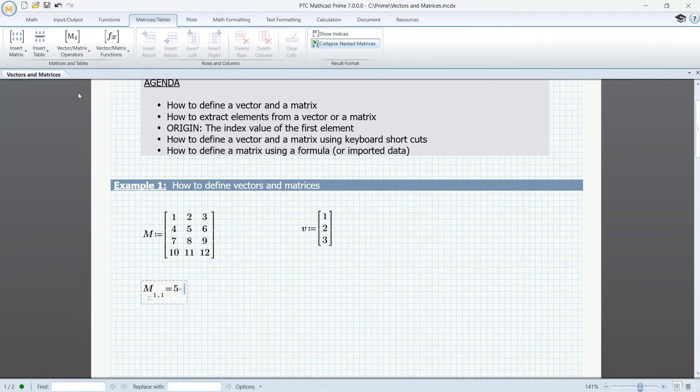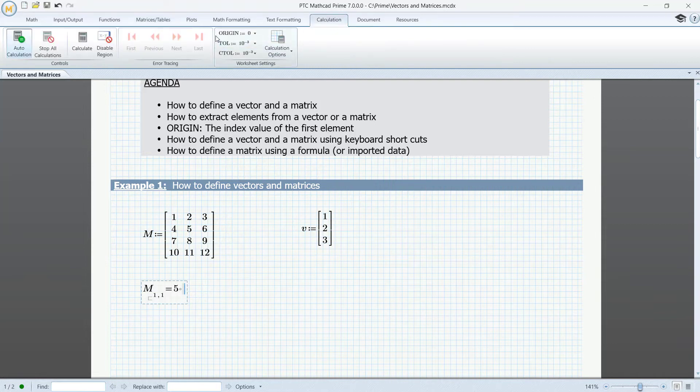However, this can be changed in the Calculation tab. Here, origin is set to 0, set it to 1, and now we have the top left element returned.